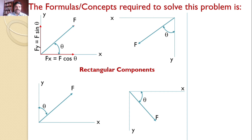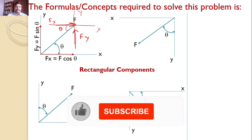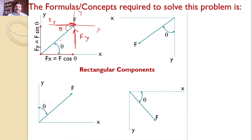For example, if this force makes an angle theta with the horizontal and is convergent at the point, then both component forces — Fx along the x-axis and Fy along the y-axis — must also be convergent. All three forces must be either convergent or divergent. That is the first thumb rule to remember.